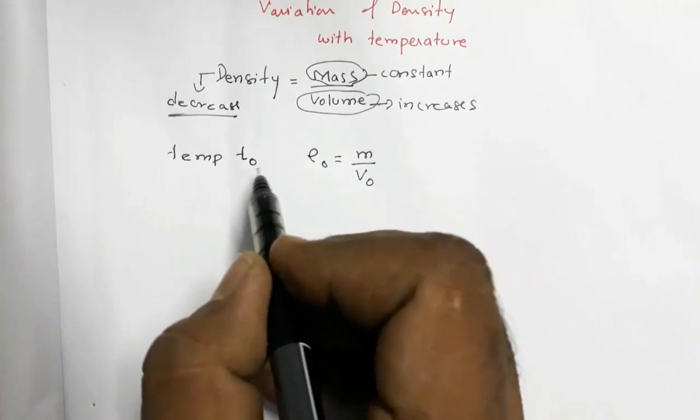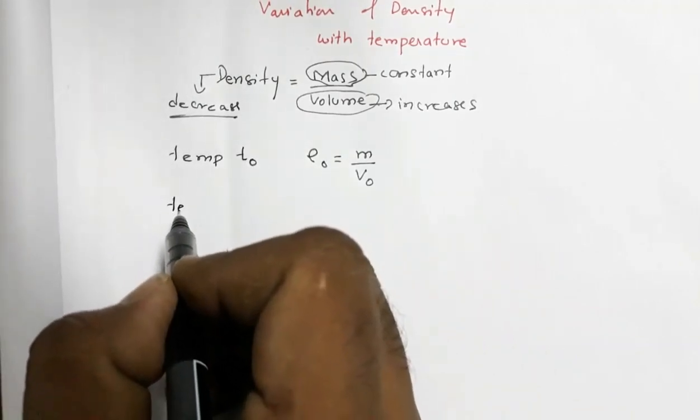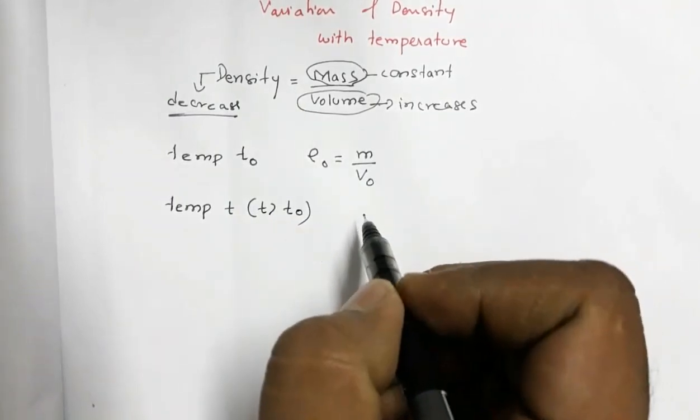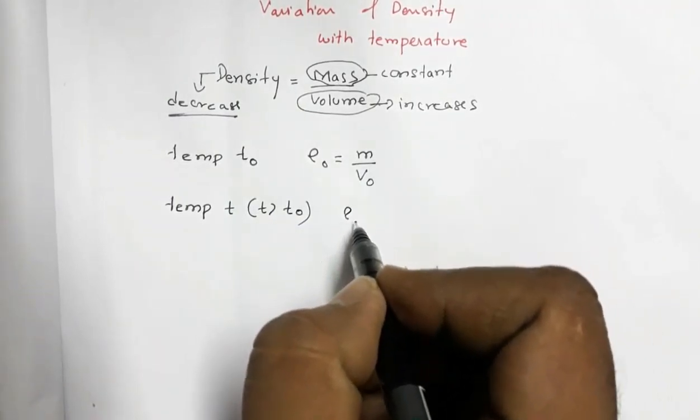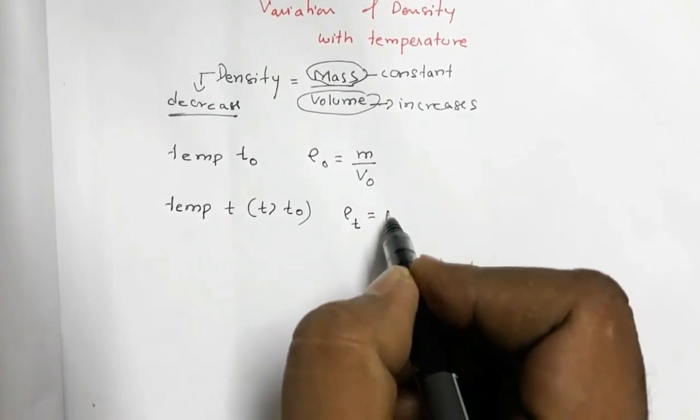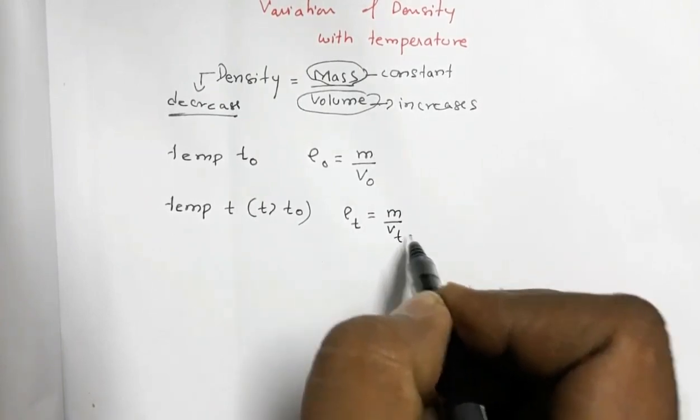Now this temperature is increased to T. This T is greater than T0. So in that case, the density ρT is equal to ρ subscript T, it is equal to M by VT.